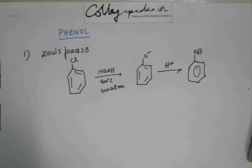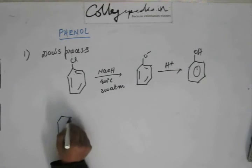In industries, when phenol is required in large scale, we use this process. Because chlorobenzene is a common organic compound, we can get it very easily. The abundance of chlorobenzene actually is the importance of this reaction, because we start with chlorobenzene. This reaction is called DOS process.